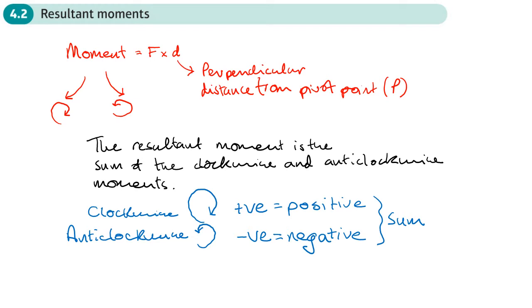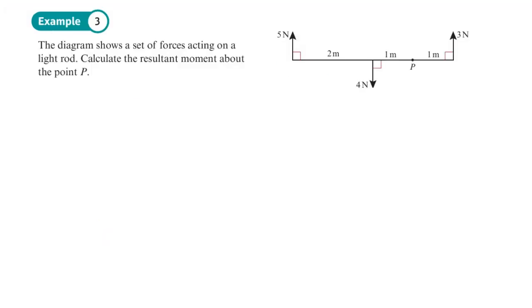If the sum of your answer is zero, it means the moments are cancelling each other out and it's not going to move in either direction. So let's do some examples with resultant moments. I always like to draw a moments diagram — this pretty much is one — and I'm going to draw the direction each force is tending to move the object in.